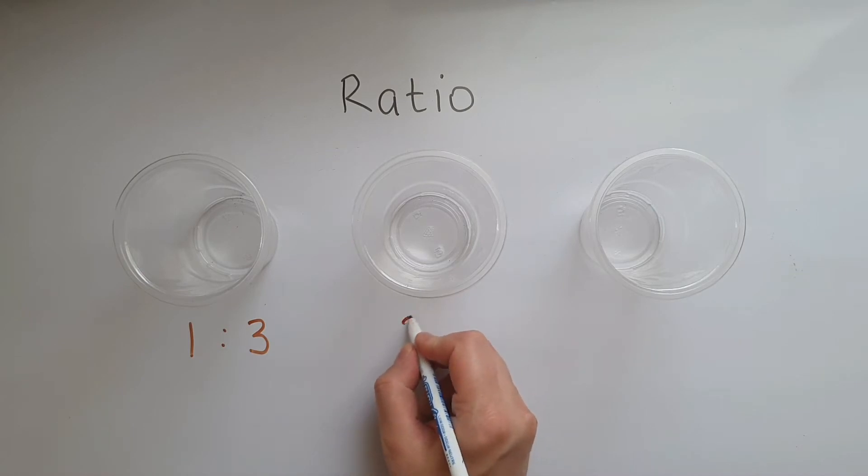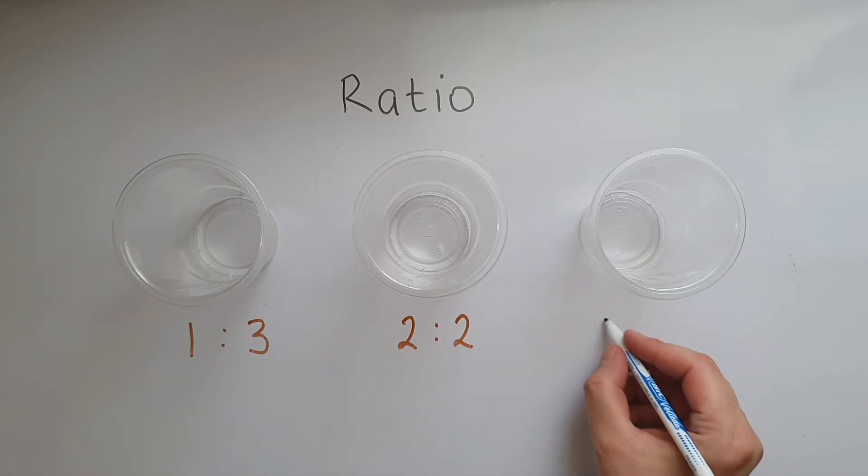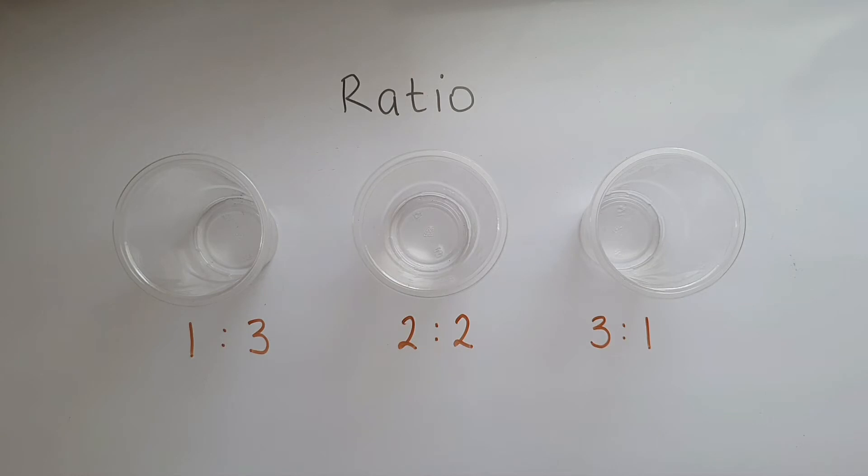Now we're going to put two spoonfuls of squash and two spoonfuls of water. And here we're going to put three spoonfuls of squash and one spoonful of water, so we can see the difference.